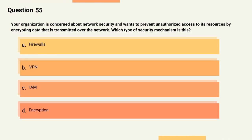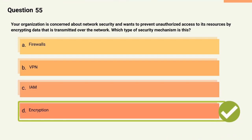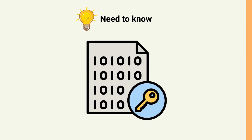Question 55: Your organization wants to prevent unauthorized access by encrypting data transmitted over the network. Which type of security mechanism is this? Options: A) Firewalls, B) VPN, C) IAM, D) Encryption. The correct answer is Option D, Encryption. Explanation: Encryption is a security mechanism used to convert plain text to cipher text to prevent unauthorized access to data that is transmitted over the network.